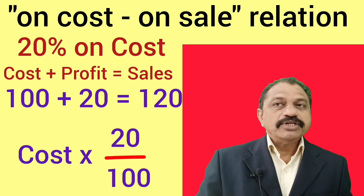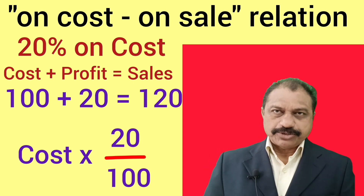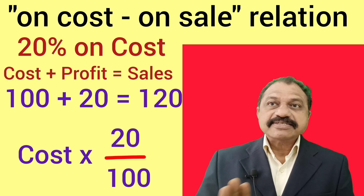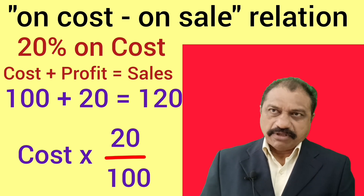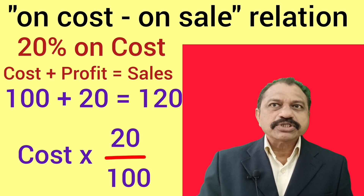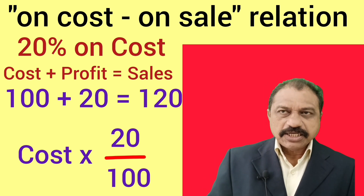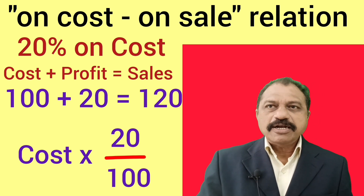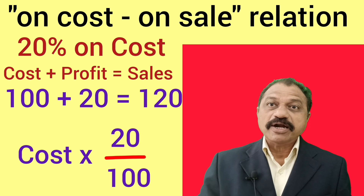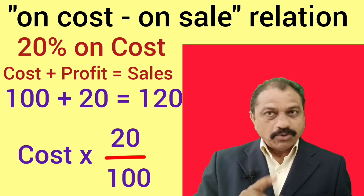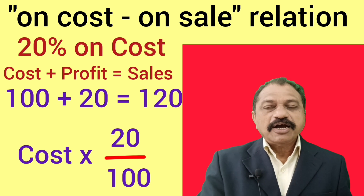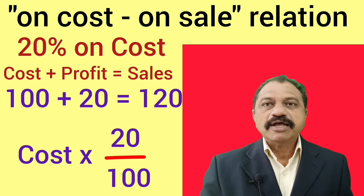Example number two. Suppose profit is 20% on cost. Here 100 stands for cost. Therefore sales is equal to cost plus profit — that is 100 plus 20 is equal to 120. Cost is 100, profit is 20, and sales is 120.